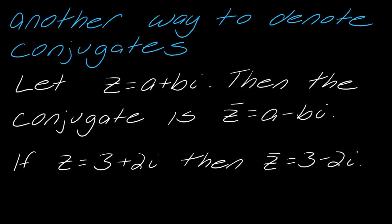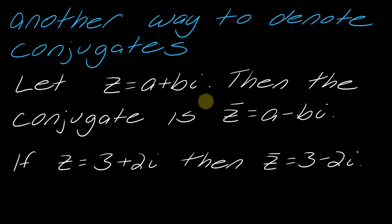There's another way we denote conjugates in math. For complex numbers, we use the letter z to denote a complex number, so let z be a plus bi. The conjugate is then written as z-bar, which is exactly what you'd expect. So if z is 3 plus 2i, then z-bar is 3 minus 2i.